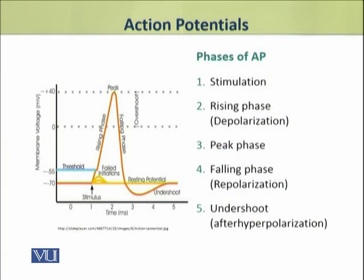The first step is the stimulation. The second step is the rising phase in which depolarization occurs. The third phase is the peak phase. The fourth is the falling phase in which repolarization occurs. The last phase is the undershoot, also known as after-hyperpolarization.